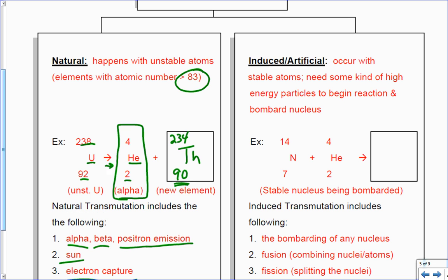So now we need to do induced or artificial. This occurs with stable atoms that need some kind of high energy particles to begin the reaction. So here, this nitrogen with 7, it's not over 83, it was right, so it's stable. I'm going to bombard it with the helium. So here, notice here's where my arrow is now: it's 7 plus 2 is 9, 14 plus 4 is 18. Look on my periodic table for 9 protons and I get fluorine. So I do this artificially by bombarding the nucleus.